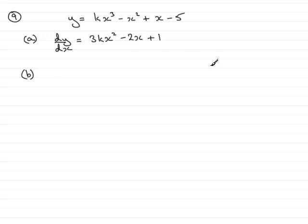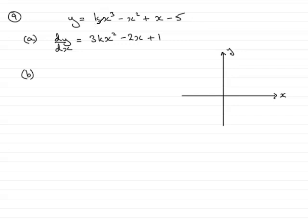In order to really appreciate what's going on, I feel we need to just draw a quick sketch. So we've got our axes, x and y, and we've got our curve C. I don't really know what the curve C is going to look like because we don't have the value of k — we don't know whether it's positive or negative. But what they tell us is that we're looking for a point on the curve which is parallel to the line 2y minus 7x plus 1 equals 0. So first of all, I'd like to think about sketching this line.